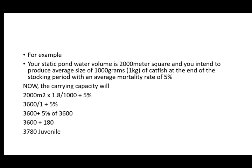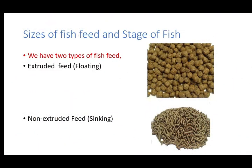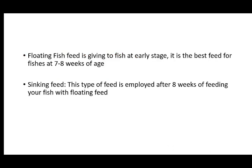We have different sizes of fish feed and different stages of fish. There are two types of fish feed: the first is extruded feed — that is the floating feed — and the second is non-extruded feed — that is the sinking feed. Floating fish feed is given to fish at the early stage; it is the best fit for fish at seven to eight weeks of age.